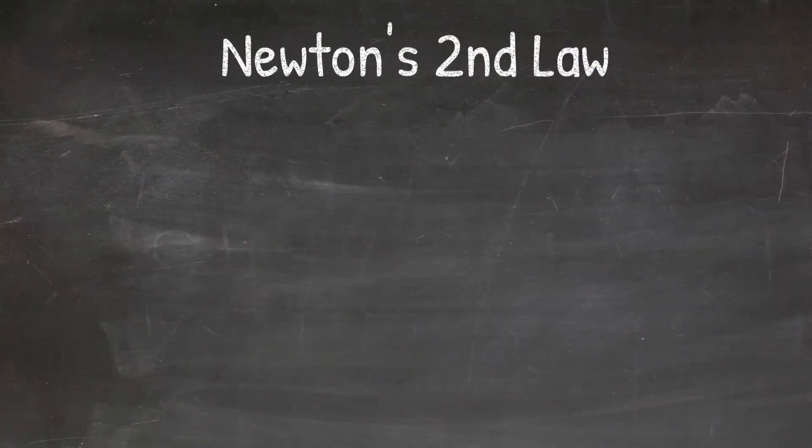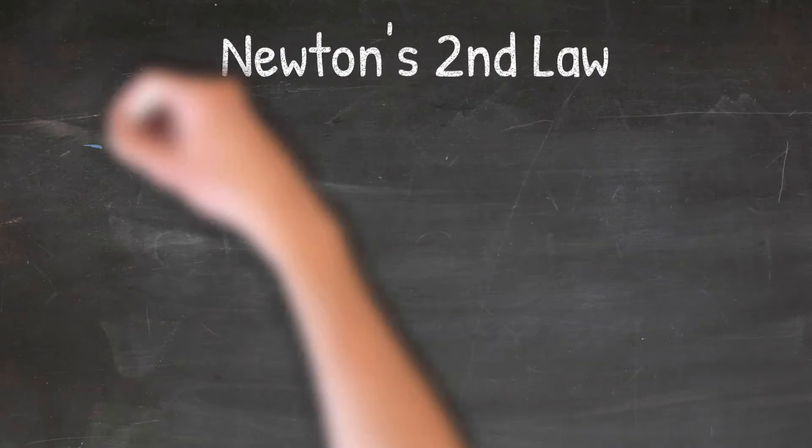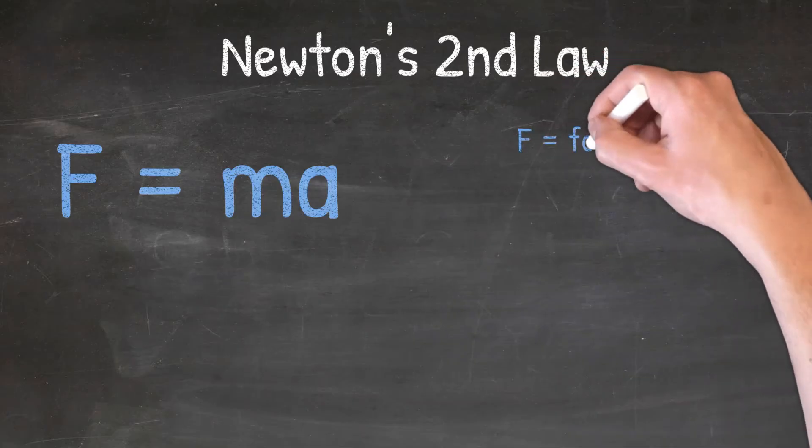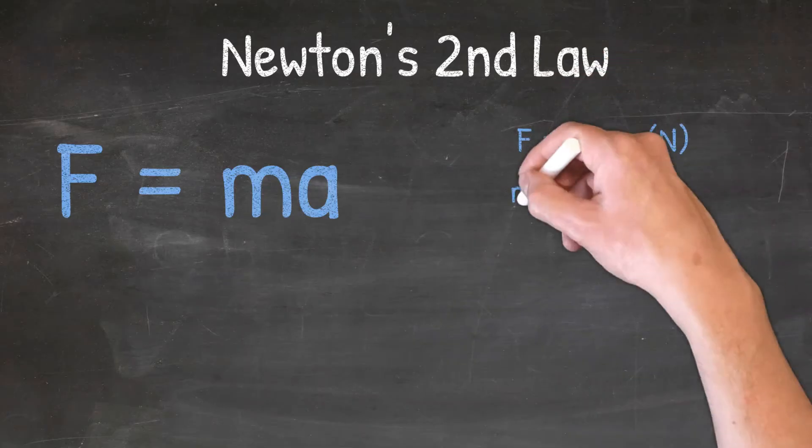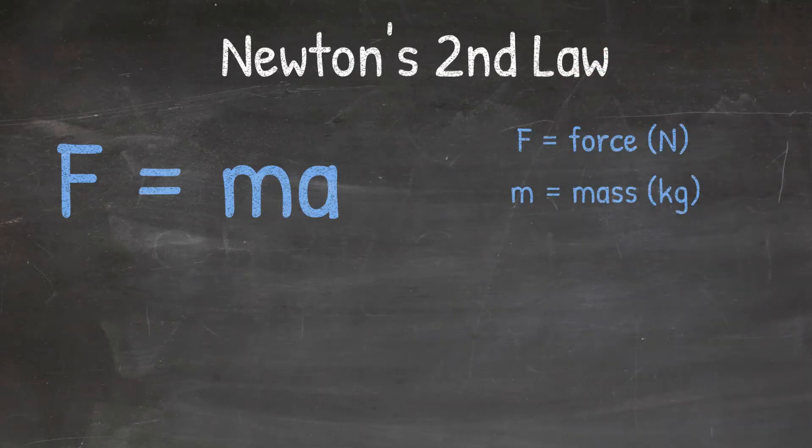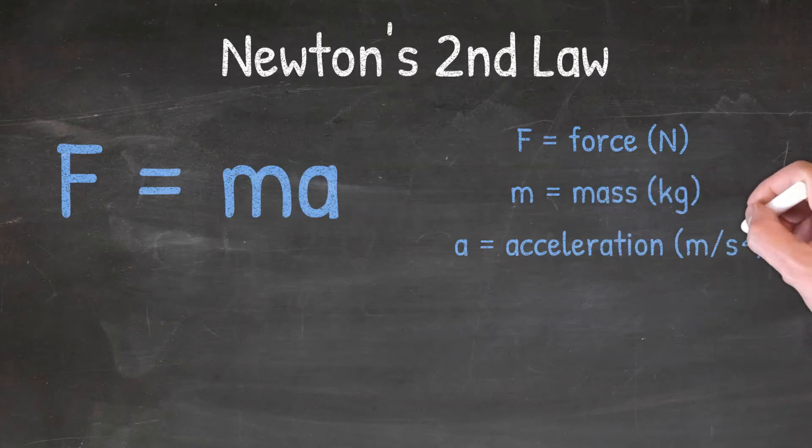Newton's second law also has a formula that goes with it, and we can better understand the law by understanding the formula. The formula is F equals MA, where F is the force in Newtons, M is the mass in kilograms, and A is acceleration in meters per second squared. This formula shows us the relationship between force, mass, and acceleration.